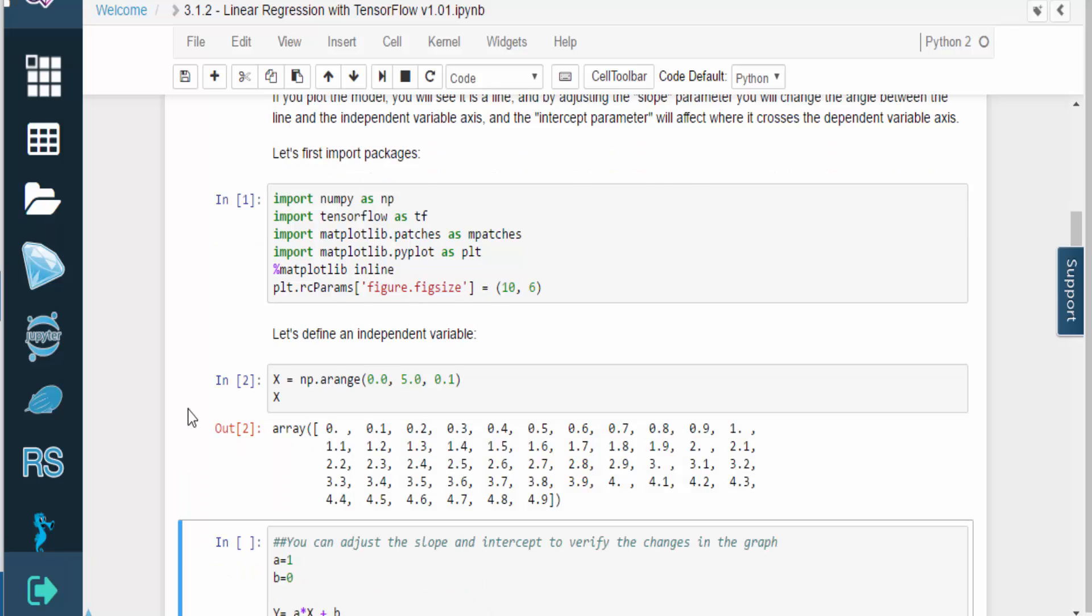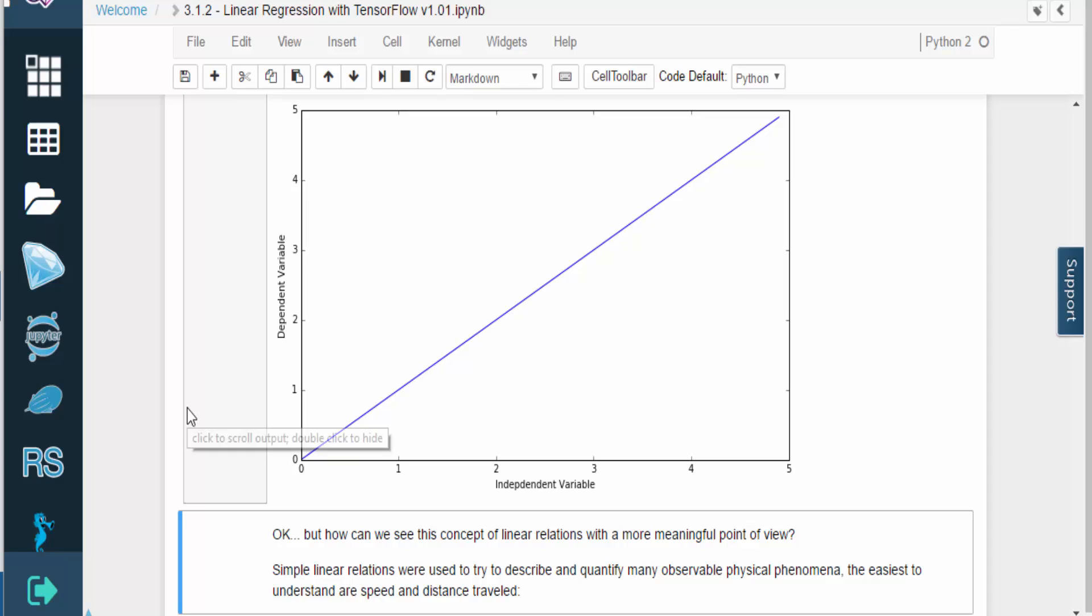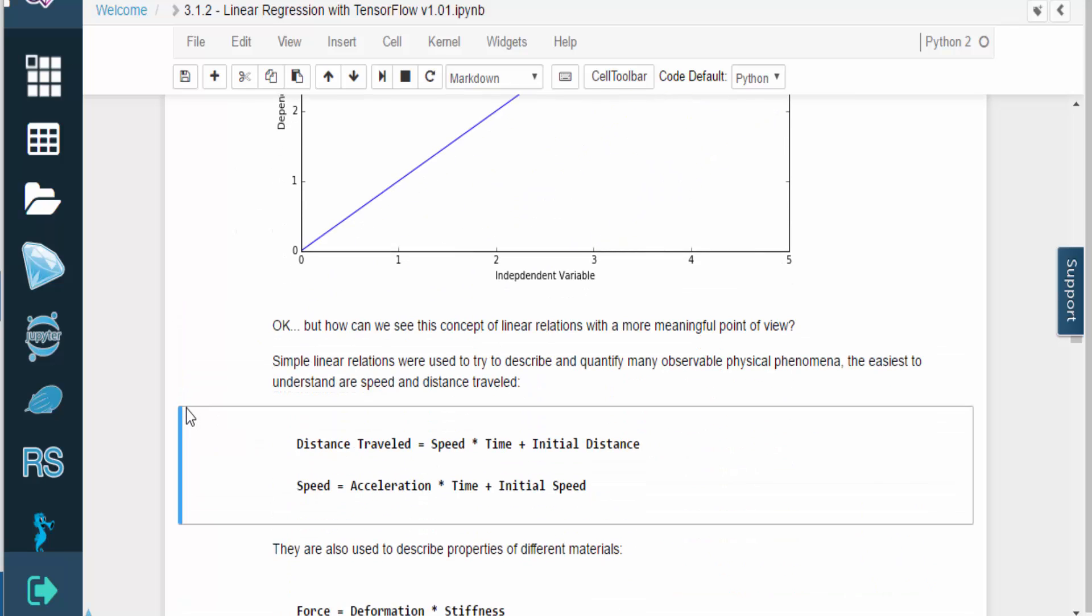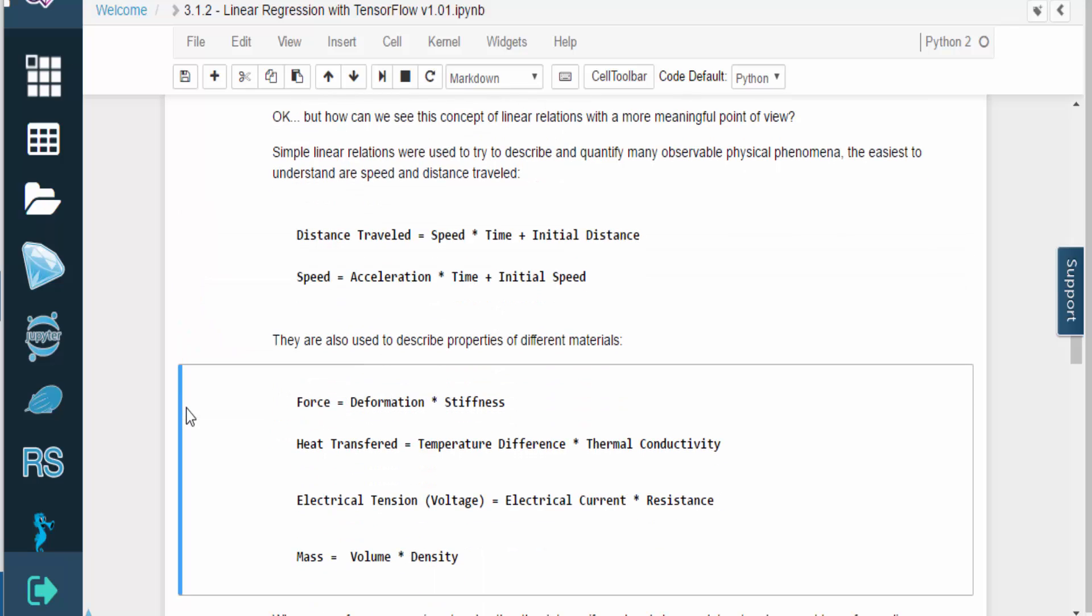Now let's see an example of a linear equation. We can form a more meaningful view of linear relations by looking at the real-world phenomena they describe. One example is the relationship between speed and distance traveled. Linear relations can also describe the properties of different materials.